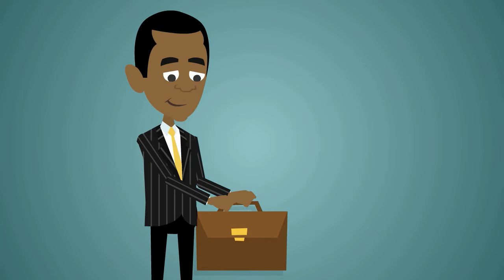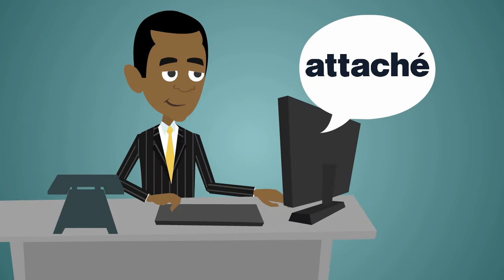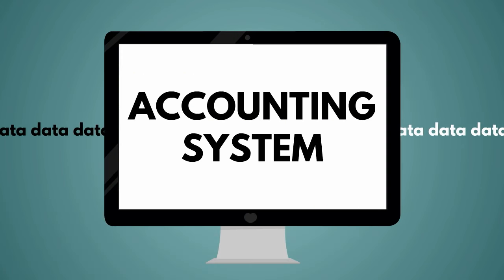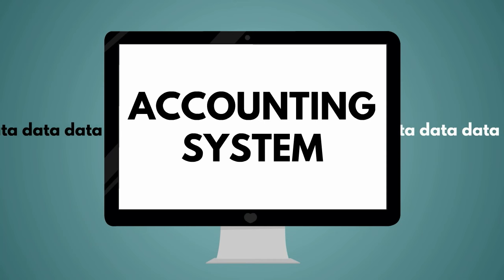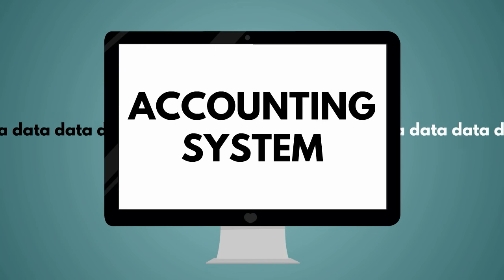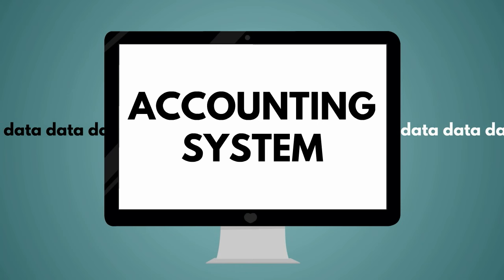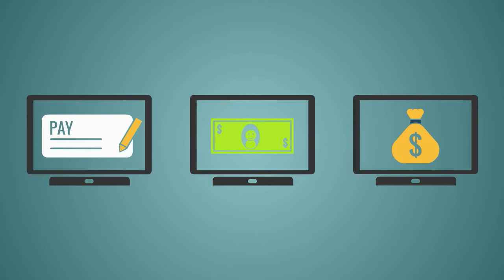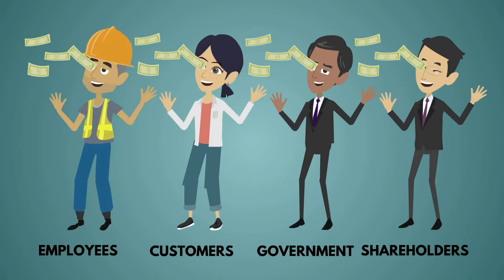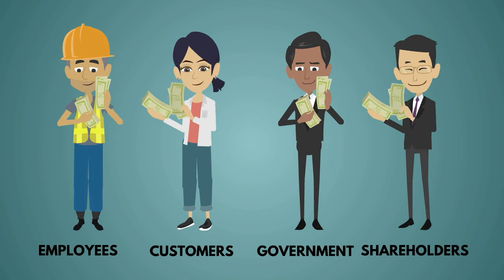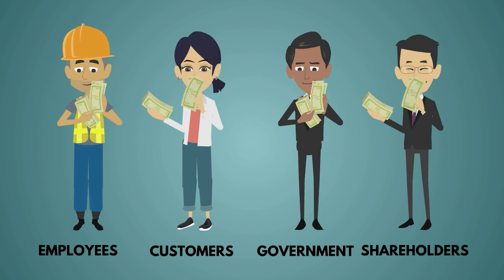We're here to give you a quick crash course for understanding what an accounting system is, what it does, and why we use it. The basic purpose of an accounting system is to put data and information in so you can get data and information out. Accounting systems make sure that people get paid, get billed, and get taxed. Essentially, it allows us to keep track and execute all of the necessary financial functions of our business.